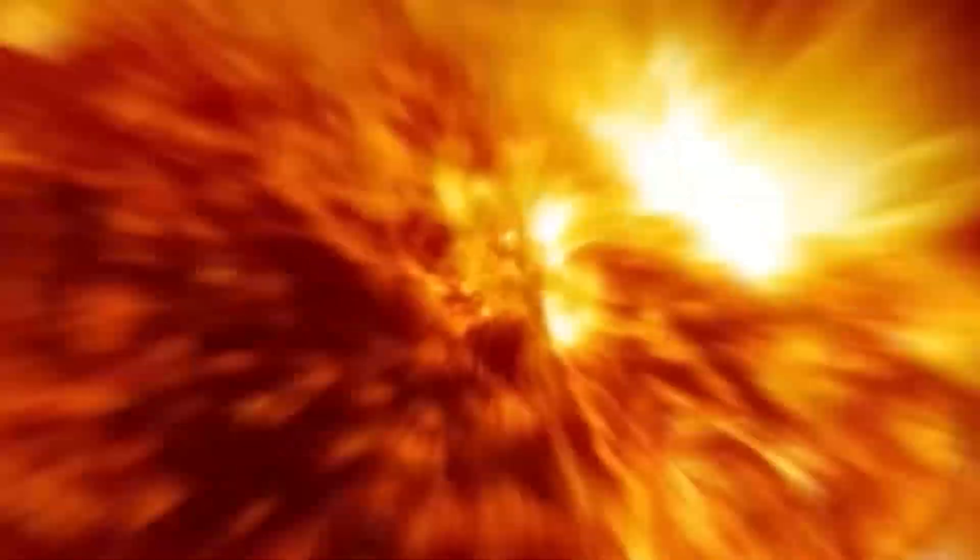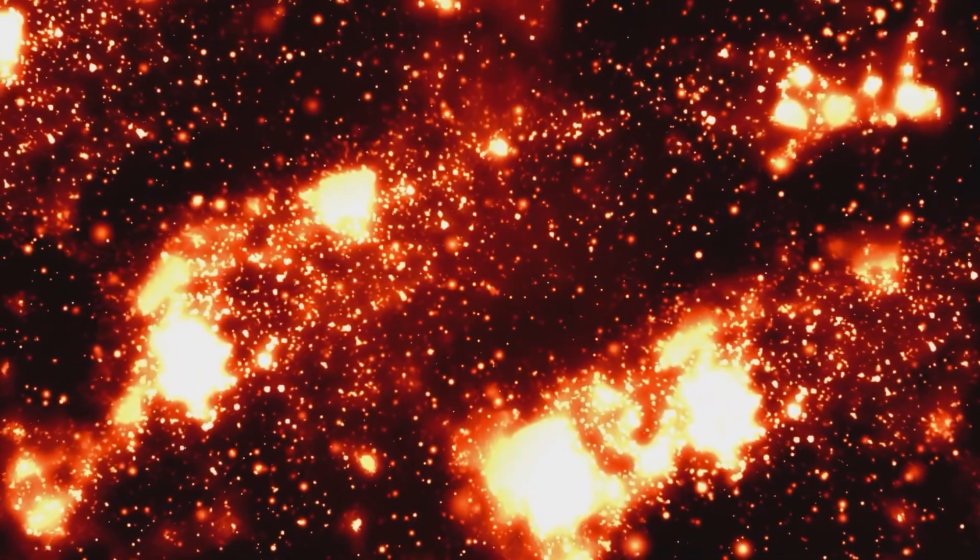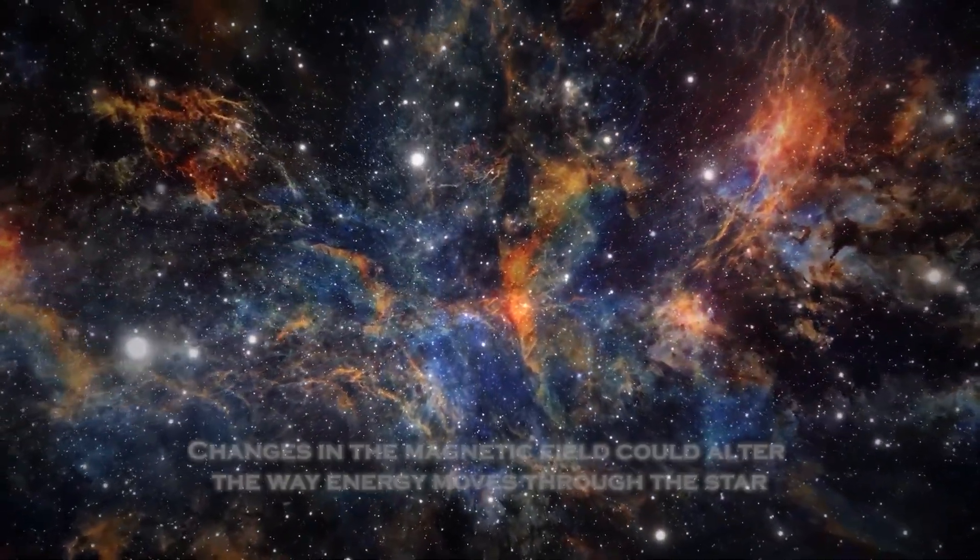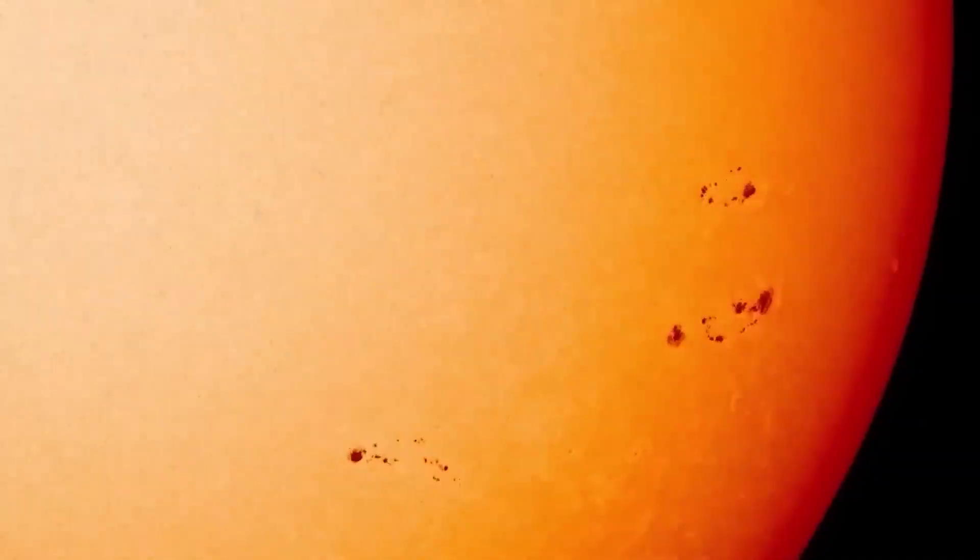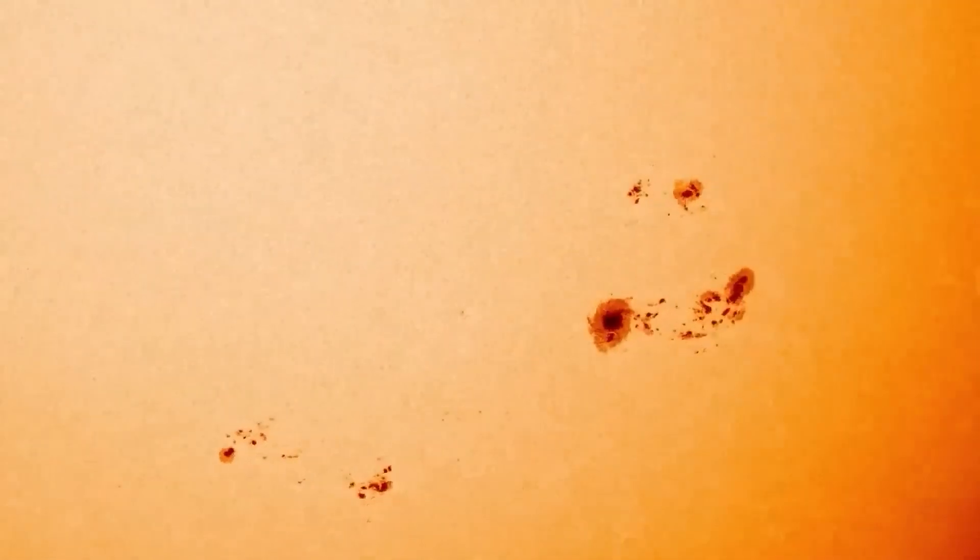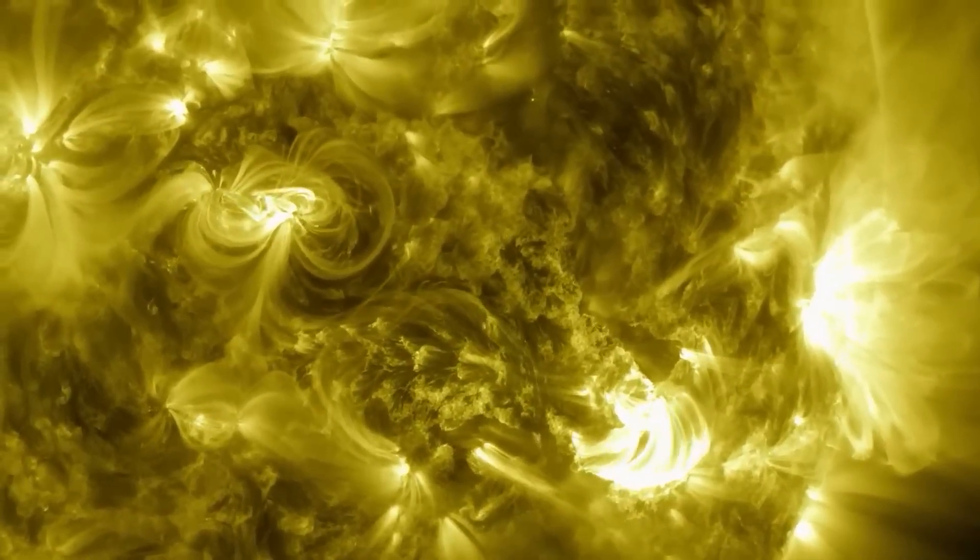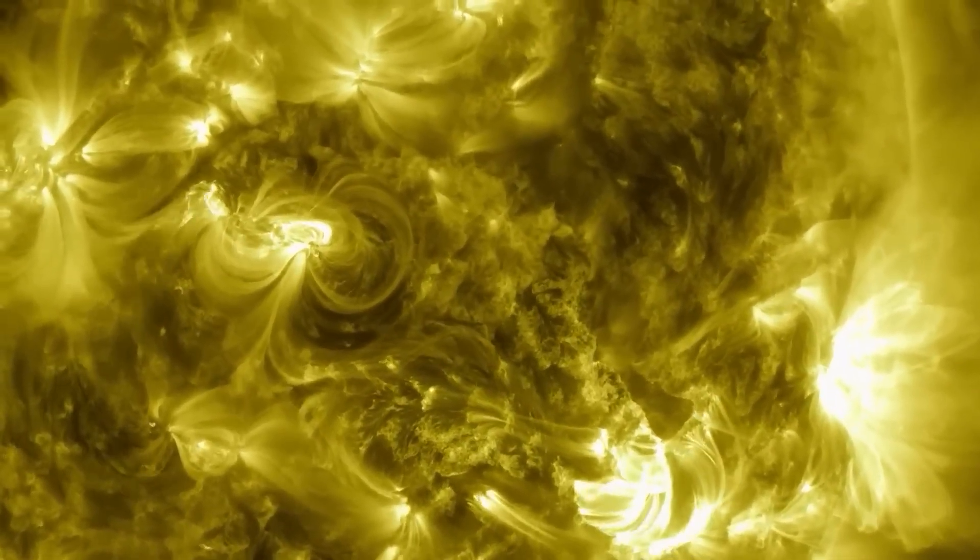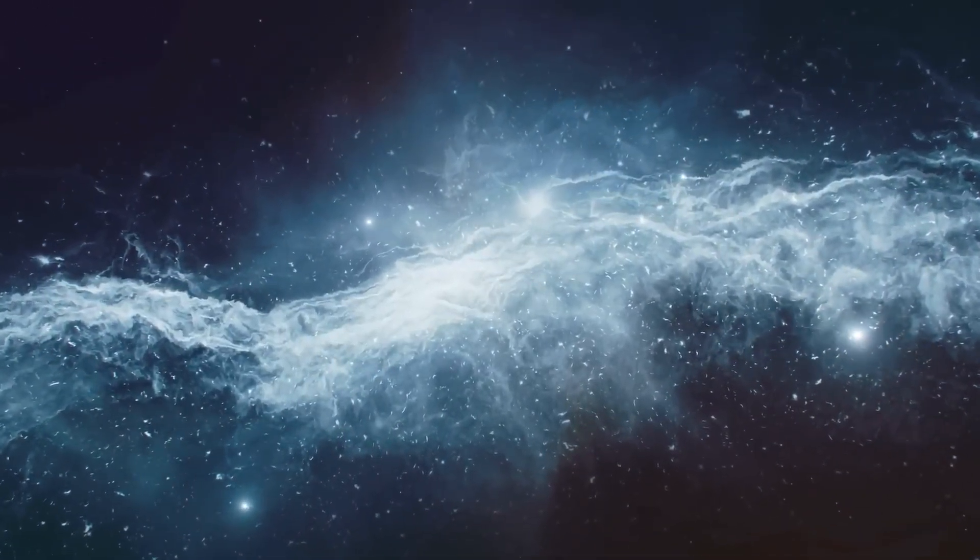Another fascinating theory is that Betelgeuse's magnetic field could influence these changes. While its magnetic activity is not well understood, recent studies suggest that the star may have a complex and dynamic magnetic field that could be affecting its brightness. Changes in the magnetic field could alter the way energy moves through the star, leading to rapid fluctuations in its luminosity. If this is the case, the current increase in brightness could be related to a change in Betelgeuse's magnetic activity, offering scientists a new avenue to explore stellar magnetism.